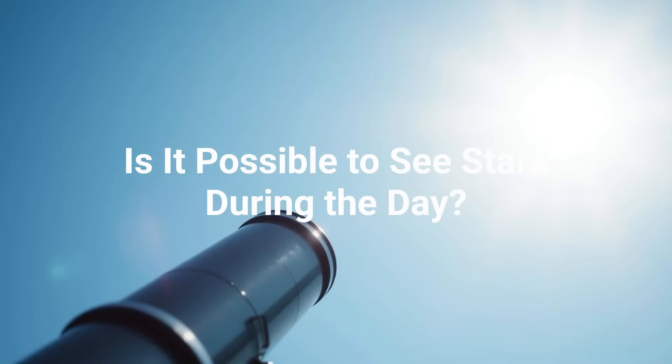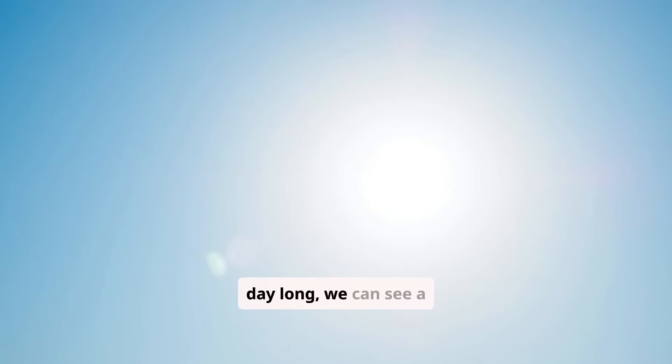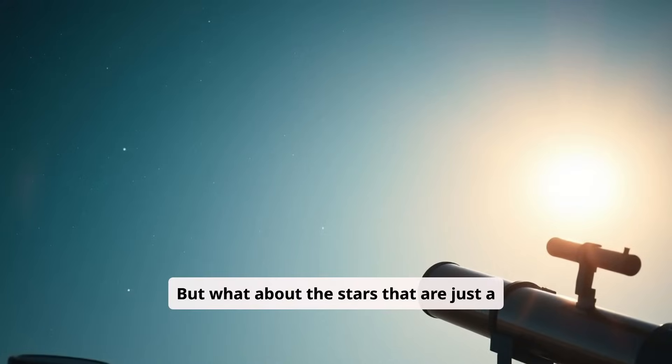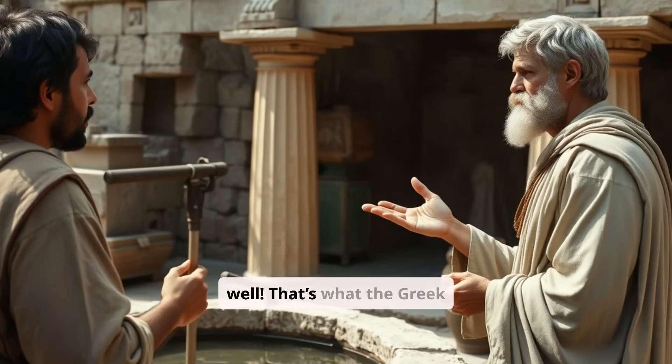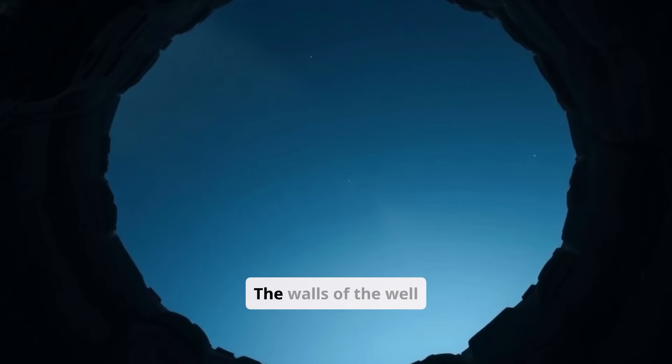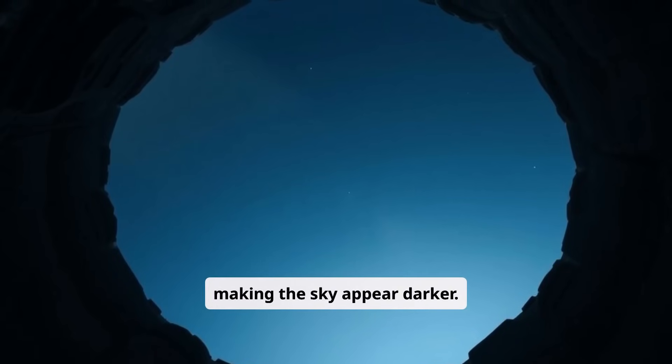Is it possible to see stars during the day? Of course it is. All day long, we can see a star called the sun. But what about the stars that are just a bit farther away? If you want to catch sight of stars during the day, you have to look at the sky from the bottom of a deep well. That's what the Greek philosopher Aristotle advised, and it seems logical. The walls of the well protect us from direct sunlight, making the sky appear darker. According to astronomers, this is just a myth.